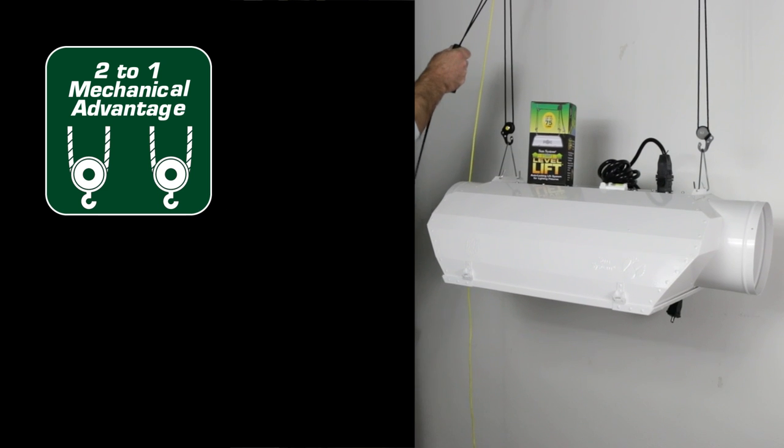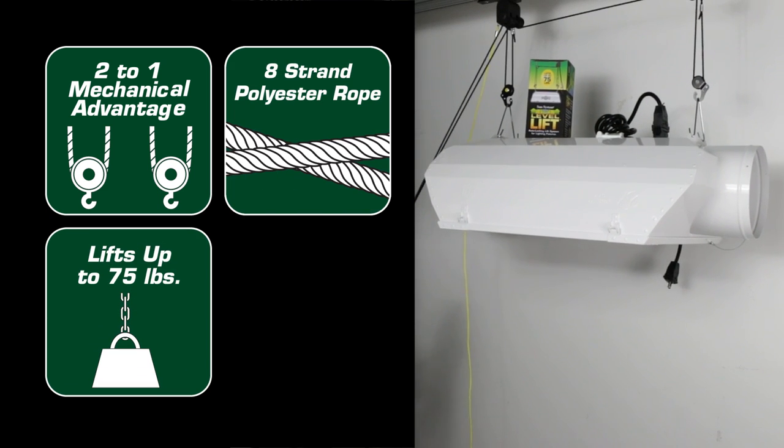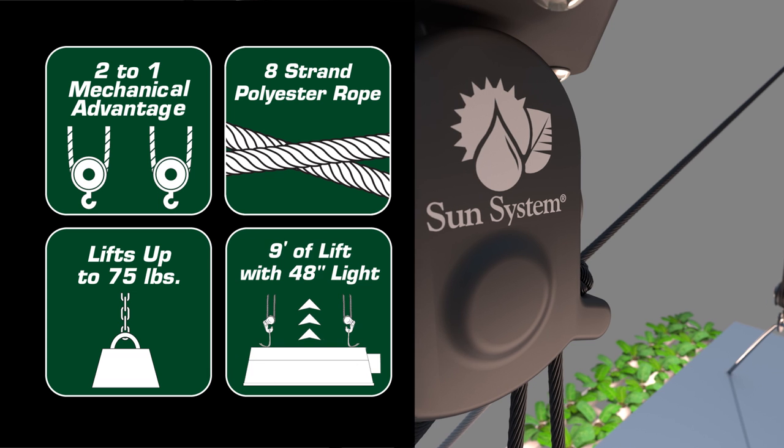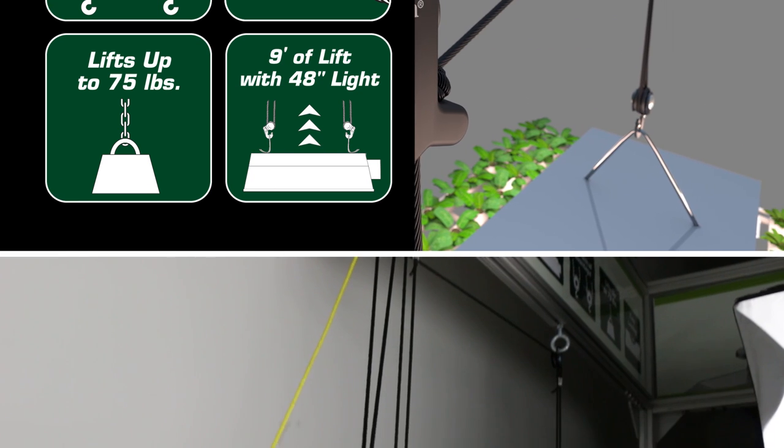The LevelLift utilizes an 8-strand polyester rope, allowing up to 75 pounds of lift, as well as 9 feet of lift with a 48-inch wide light.